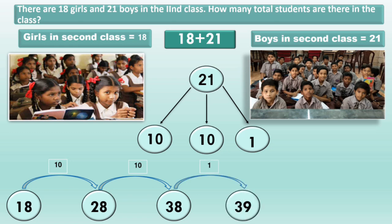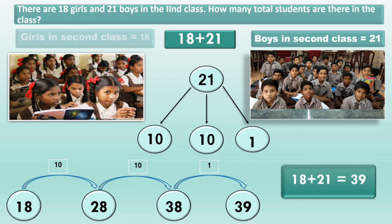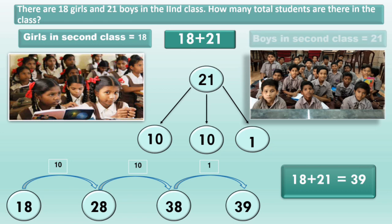In second class, number of girls is 18 and number of boys is 21. So, there are 39 students in second class.